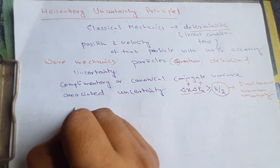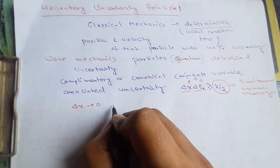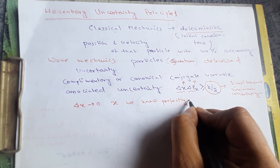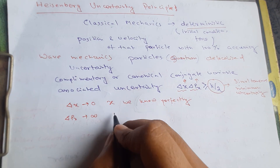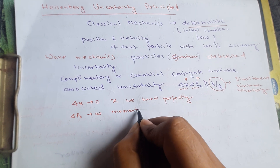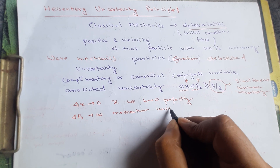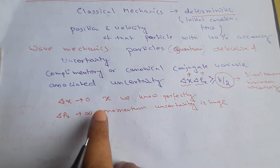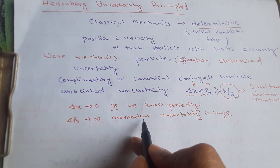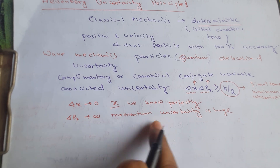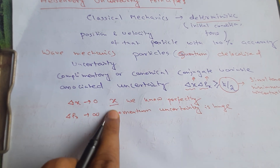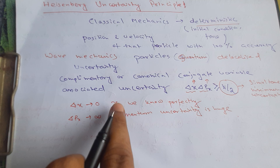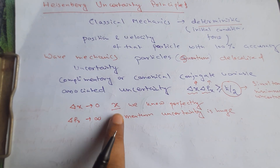What this means is: if delta x tends to zero — meaning we know the position perfectly — then delta px tends to infinity, so the momentum uncertainty is huge. In other words, if you try to measure the position of a quantum particle, you simultaneously give the particle a huge momentum. Without giving it a huge momentum, you cannot determine the position perfectly. Without disturbing the state, you cannot make a perfect measurement of any variable.